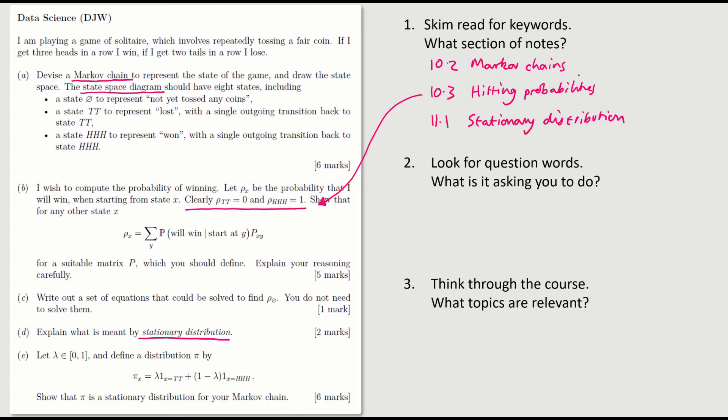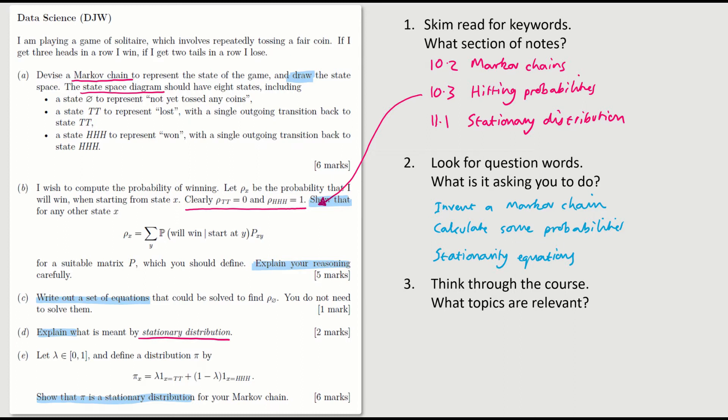Next, look for question words — what do we actually have to do? Draw a state space diagram, show some formula, explain our reasoning, write out equations, explain what is meant by something, and show that pi is a stationary distribution.